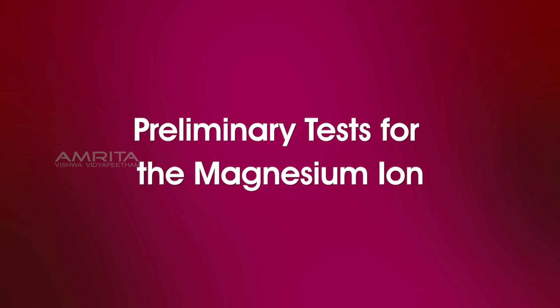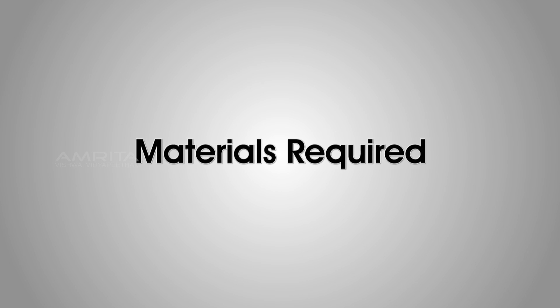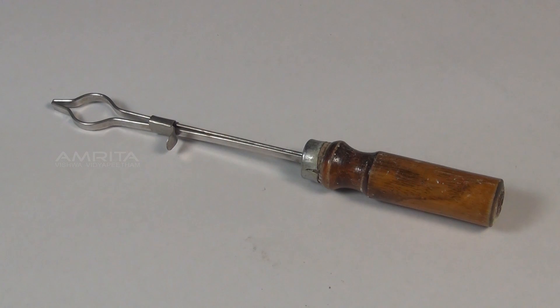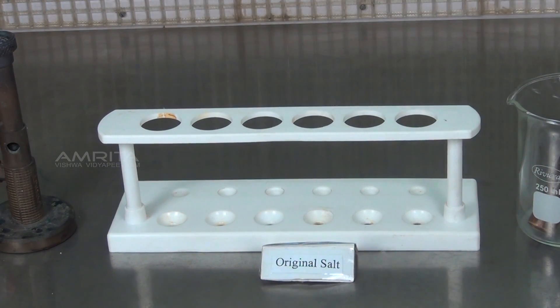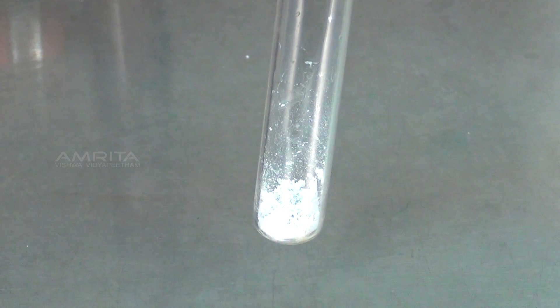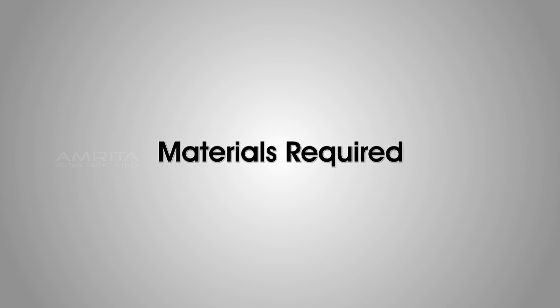First, we look at the preliminary tests for magnesium ion. Dry Heating Test. Materials required: original salt in a test tube, test tube holder, and Bunsen burner. Procedure: Take a small quantity of salt in a test tube and heat it over the Bunsen burner. A white residue that glows on heating indicates the presence of magnesium ions.